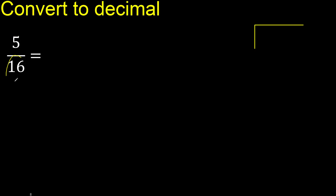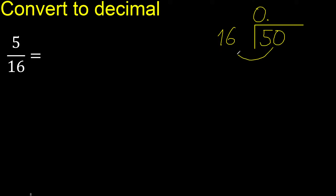5 divided by 16. 5 is less, therefore complete — always complete with 0, and here: 0 point. Ok, 50 is not less, therefore 16 multiplied by which number is nearest to 50 but not greater?